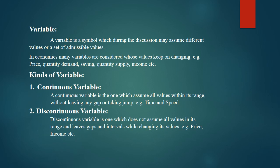For example, price changes from 10 to 10.1, then 10.2, then 10.3, or it may jump from 10 to 20, 10 to 12, 10 to 11 — so there will be intervals and gaps. In the same way, income changes with gaps, and quantity demanded and quantity supplied also change with gaps. These are all examples of discontinuous variables.